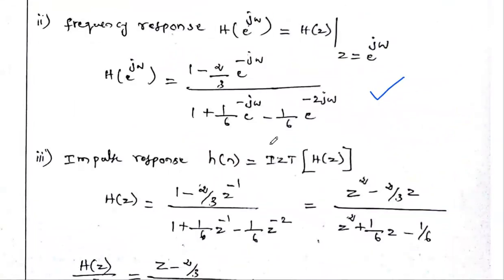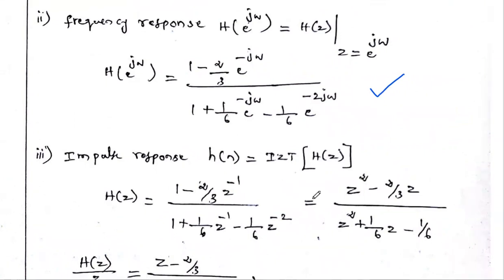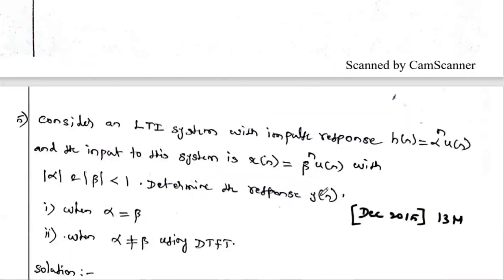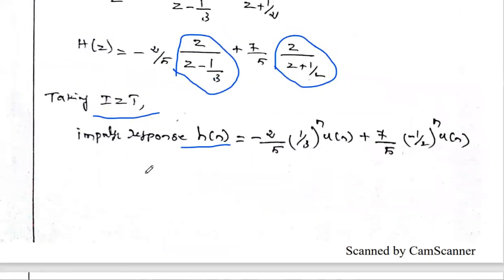Then in the H(z) equation, substituting z = e^jω gives the frequency response. Taking the inverse Z-transform of H(z) gives h(n). Alternatively, taking the inverse DTFT of H(e^jω) also gives h(n) — both methods yield the same answer. This is the impulse response of the given system.